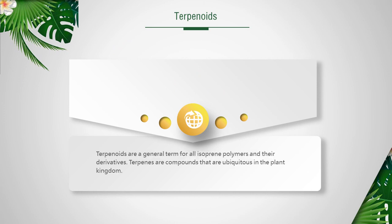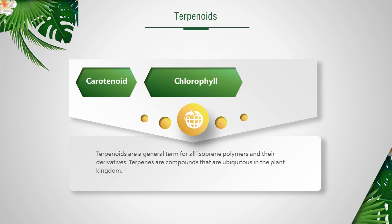Terpenoids are a general term for all isoprene polymers and their derivatives. Terpenes are compounds that are ubiquitous in the plant kingdom. Terpenoids play an important role especially in plants, such as carotenoids and chlorophyll, which are important photosynthetic pigments, and plastiquinons, which are important electron emitters in photosynthesis and respiratory chains.